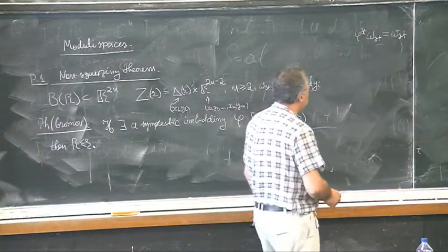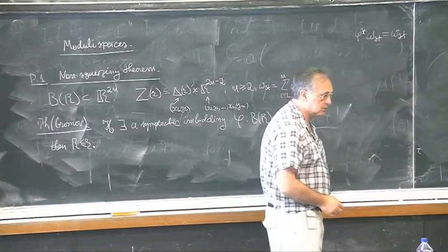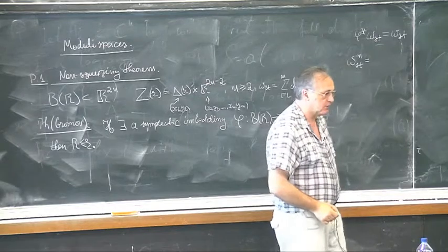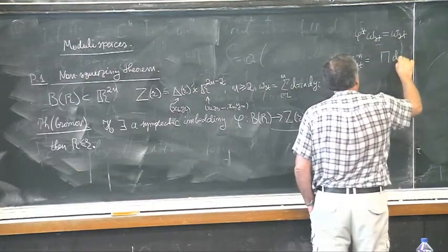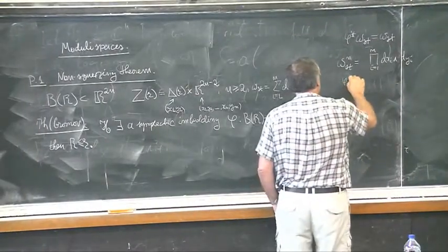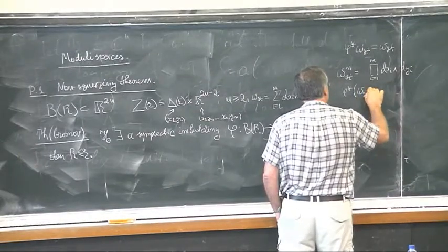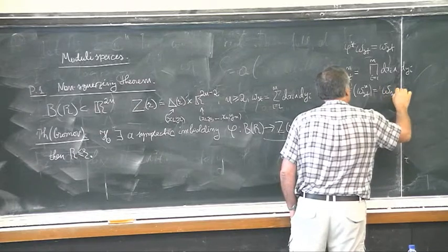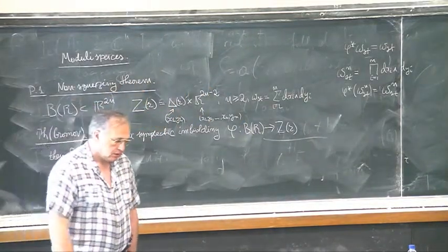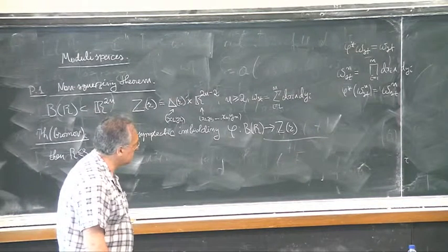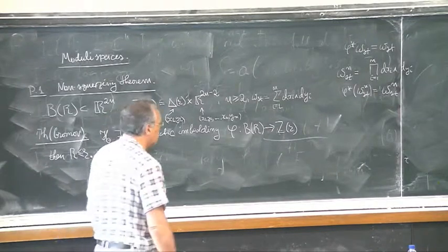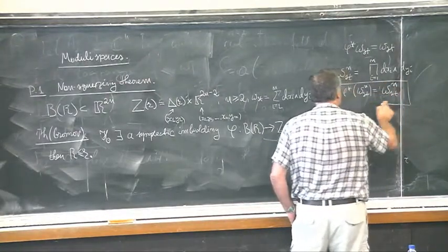Remark that a symplectomorphism preserves the volume form. Since ω_standard to the power n is nothing but the volume form of ℝ^{2n} — it is a product of dx_i ∧ dy_i — every symplectomorphism preserves also the volume. This was the main thing used in symplectic topology up to Gromov; nothing more than what follows from this volume-preserving property was known, more or less.